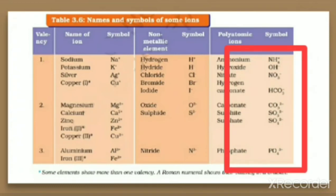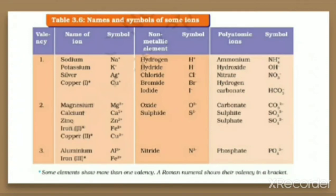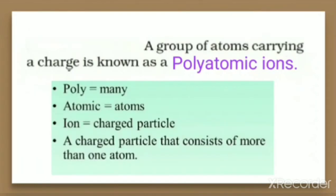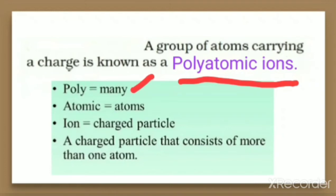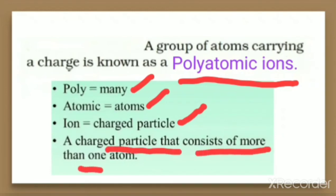Now looking at another table, you can find ions that are not single atoms — there are groups of atoms with an overall charge. That type of species is called polyatomic ions. They are also ions, but in this case there are groups of atoms carrying some charge. The word 'polyatomic' — poly relates to many, atomic relates to atoms, and ion relates to charged particle.